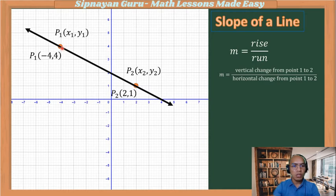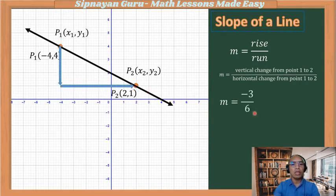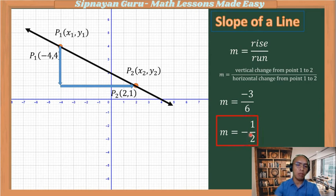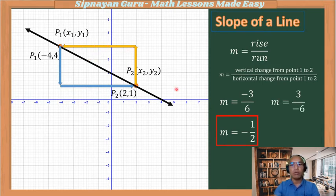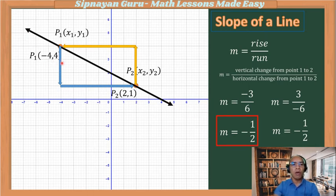Using point one as the reference, we count 1, 2, 3 units down — then 1, 2, 3, 4, 5, 6 units for the horizontal distance. So the slope is negative 3 over 6, which simplifies to negative one-half. If we use point two as the reference, we go up 3 units (positive 3) and the run is negative 6. Simplified, the slope is still negative one-half. So the slope of the line passing through (−4, 4) and (2, 1) is negative one-half.